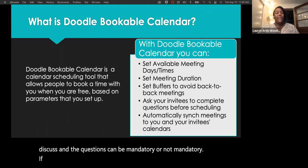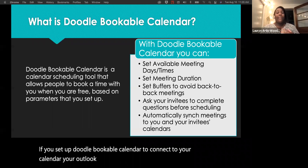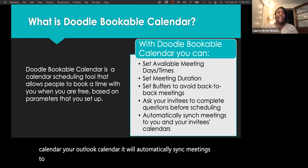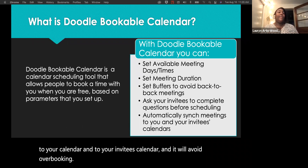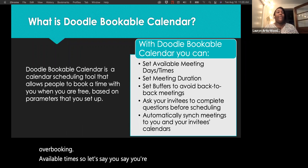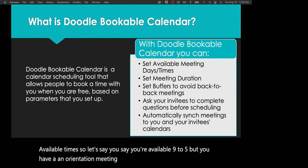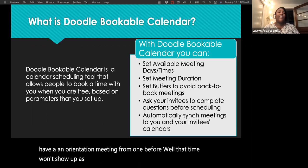If you set up Doodle Bookable Calendar to connect to your Outlook calendar, it will automatically sync meetings to your calendar and your invitee's calendar, and it will avoid overbooking unavailable times. For example, if you say you're available nine to five but you have an orientation meeting from one to four, that time won't show up as available if you've linked your calendar.